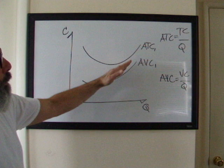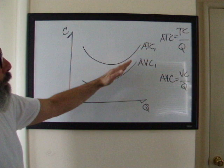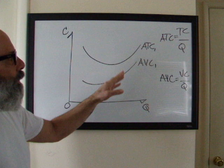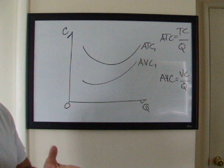We can see that the average variable cost follows a similar pattern. When output's low, your variable costs are low, and when output's high, your variable costs rise quickly because variable cost is a cost that changes with quantity.